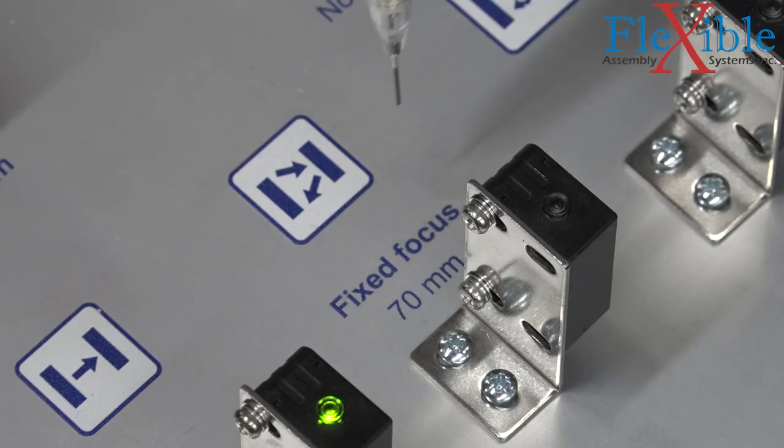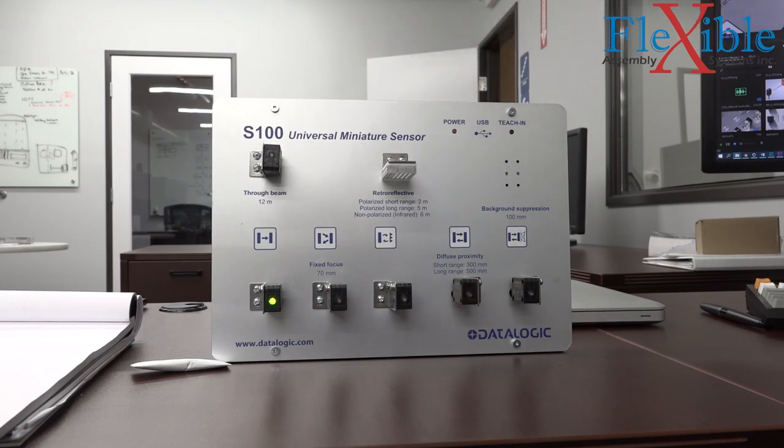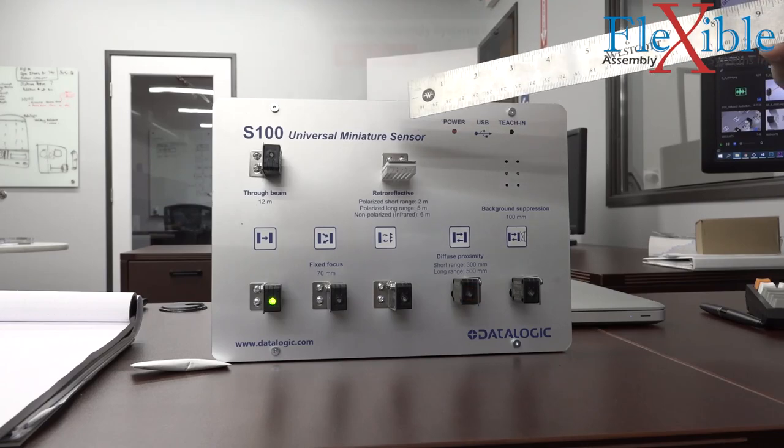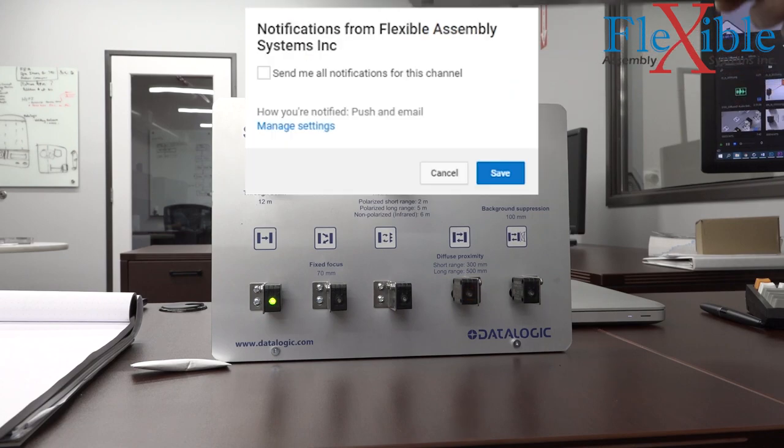There is a third type of diffused sensor which is capable of background suppression. We will cover that in part 4 of the series. If you are interested in purchasing any of the sensors from this video, please visit the link in the description. And if you'd like to see part 4, don't forget to subscribe to Flexible Assembly and enable alerts. Thanks for watching. See you in the next one.